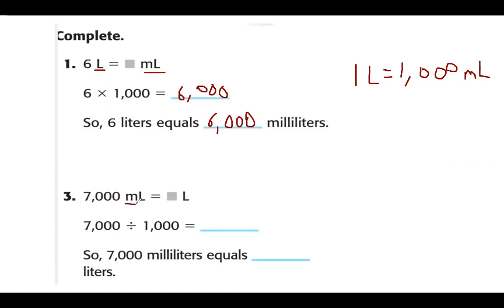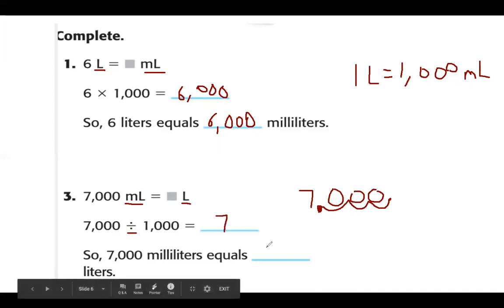Now the second problem flips it — we're starting with milliliters and converting to liters. Starting with the smaller unit means we divide by 1,000. Moving the decimal three places to the left, the decimal replaces the comma, and we end up with the whole number seven. So 7,000 milliliters is equal to seven liters.